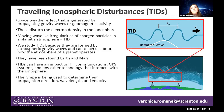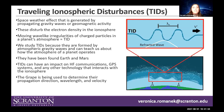TIDs are a space weather effect generated by propagating gravity waves or geomagnetic activity, which disturbs the electron density in the ionosphere and creates moving wave-like irregularities of charged particles in a planet's atmosphere. We study TIDs because they are formed by atmospheric gravity waves and can teach us about how the atmosphere of a planet behaves. They have been found on Earth and Mars, and TIDs are important because they can impact high-frequency communications, GPS systems, and any technology that interacts with the ionosphere.